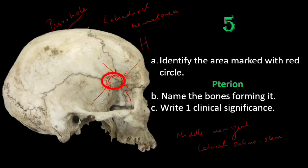One more question often asked is the surface marking of the pterion. The central point of the pterion is situated 4 centimeters above the zygomatic arch and 3.5 centimeters behind the frontozygomatic suture. This point is known as the Sylvian point.